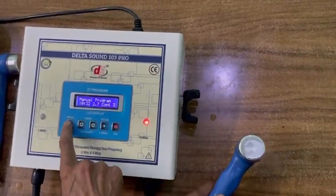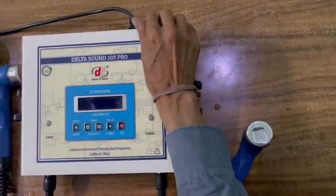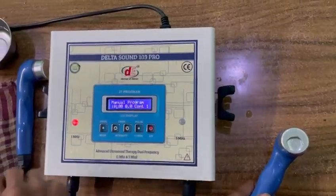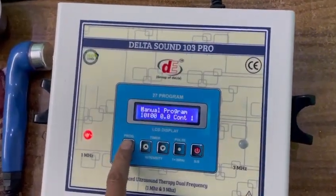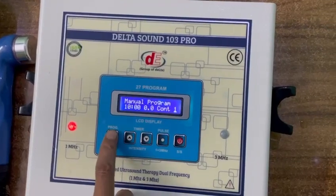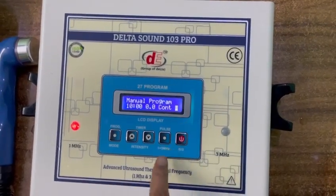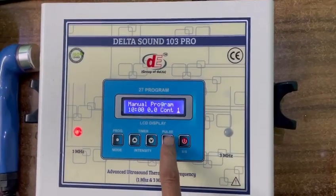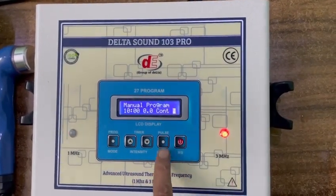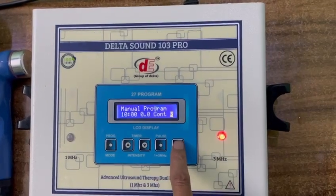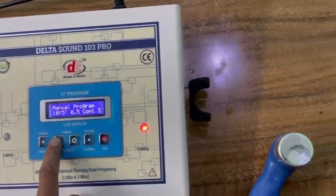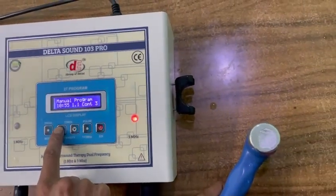I once again repeat how to go for 3 MHz. Press program button two times. Second time again. Now you can change the frequency. 1 MHz. It is just showing in 1 MHz blinking. Now you can press 1 or 3 MHz button one time. Start and simply increase the intensity. Now it is working on 3 MHz.